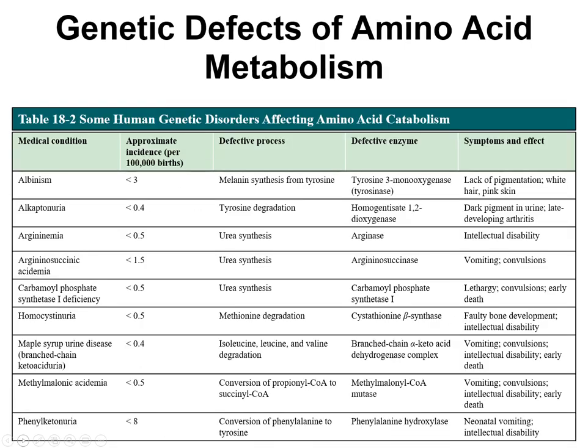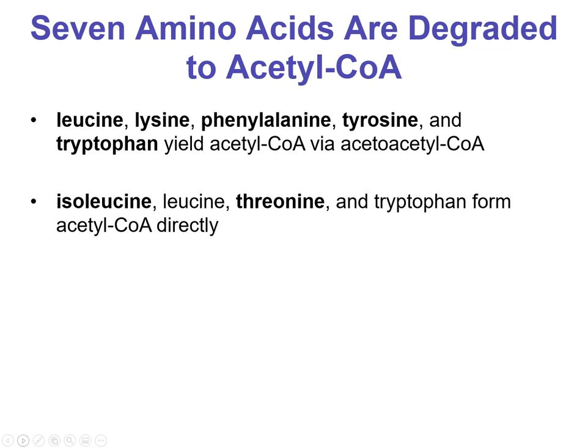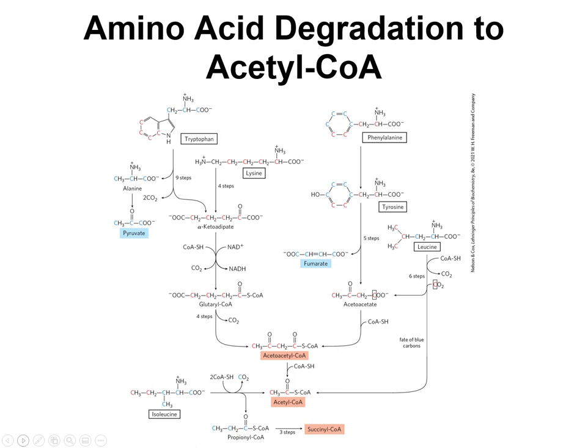Some genetic defects are caused by issues with amino acid metabolism — several will be covered in student presentations and literature reviews. Seven amino acids are degraded to acetyl-CoA; you don't need to memorize which ones. You can directly make acetyl-CoA, or make acetoacetyl-CoA which can be cleaved to make acetyl-CoA molecules. Just understand the concept of how they feed into the major pathways.